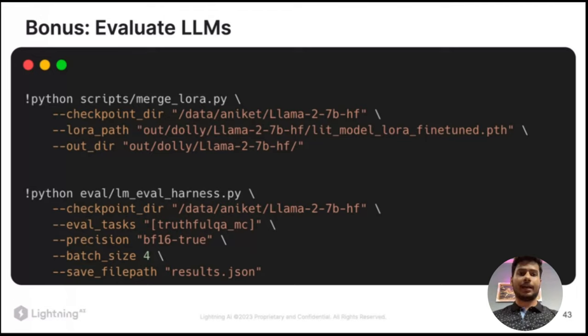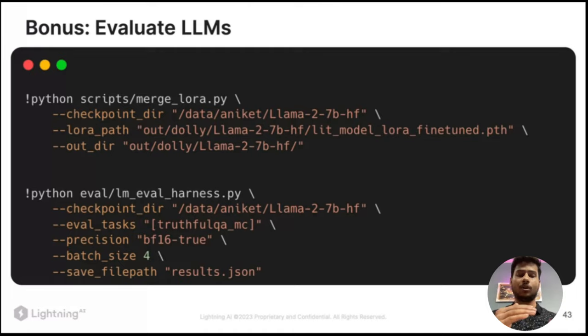As a bonus, after training you can evaluate your LLM on different tasks like TruthfulQA and BoolQA and compare against online benchmarks for Llama 2 7B to see how your trained model performs. In LitGPT, all you need to do is run the eval function, provide the checkpoint directory of your trained model, specify the task, and it will save results to a results JSON file.